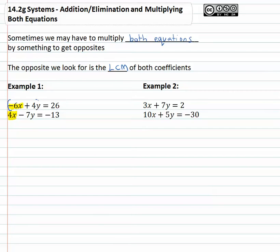Since we already have a negative on the first equation, let's multiply it by two on both sides. That'll give us -12x, there's that twelve we wanted, plus 8y equals 52.